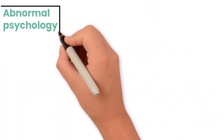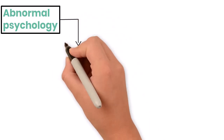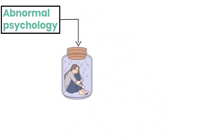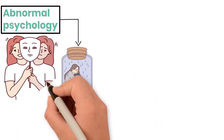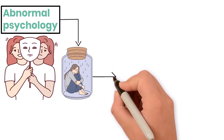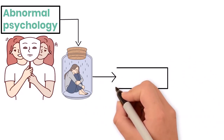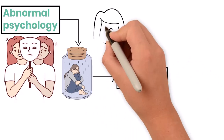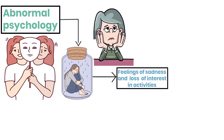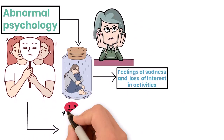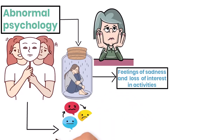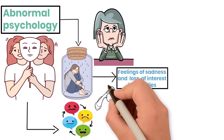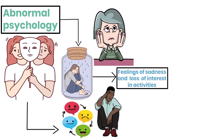Similarly, abnormal psychology studies common mood disorders such as depression and bipolar disorder. Depression is characterized by persistent feelings of sadness and loss of interest in activities, impacting a person's ability to function. Bipolar disorder involves extreme mood swings from high, mania, to low, depression, which can be very disruptive to one's life.